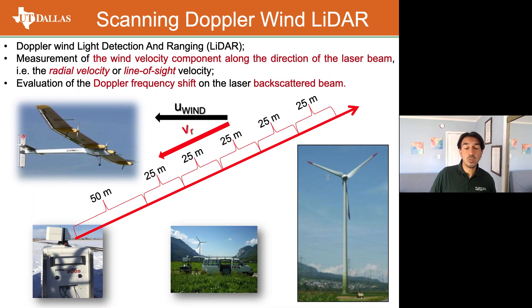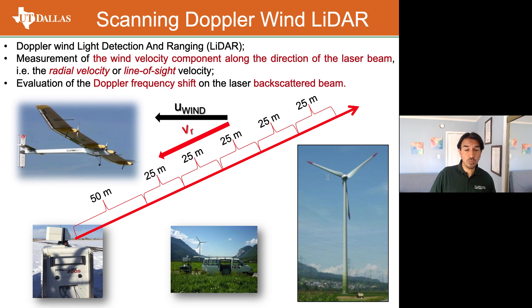In the field, we use instruments called wind gliders — a laser-based instrument that performs measurements of the wind and concentration of particles suspended in the air over a very large volume with very high resolution. For the first time, we are able to perform very accurate and detailed measurements about the wind field and the wakes produced by wind turbines.